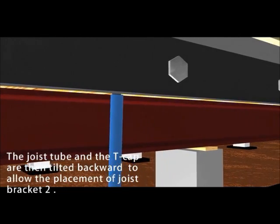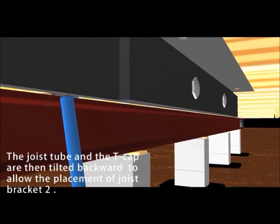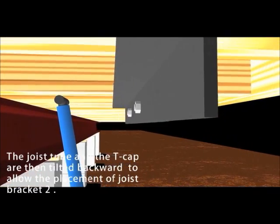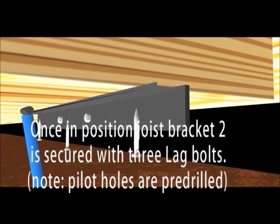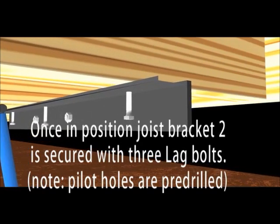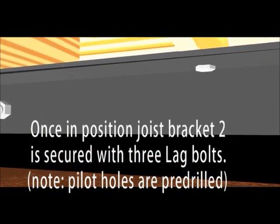The joist tube and T-cap are then tilted backwards to allow the placement of the joist bracket. Once in position, joist bracket 2 is secured with three lag bolts. Note the pilot holes are pre-drilled.